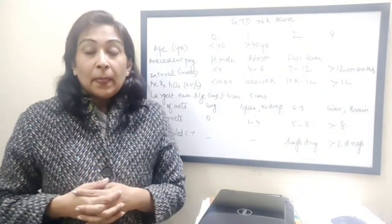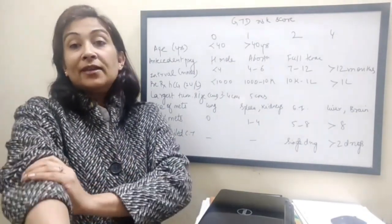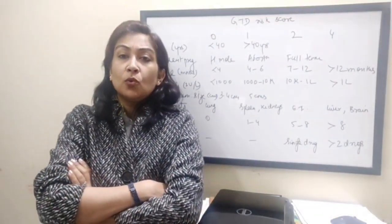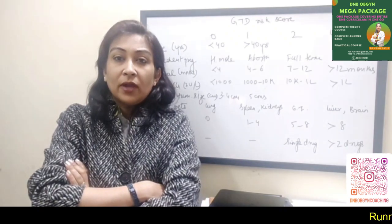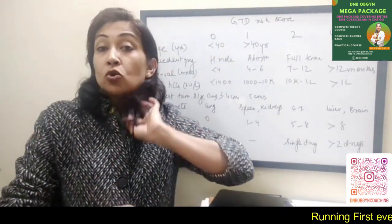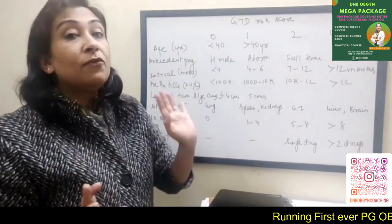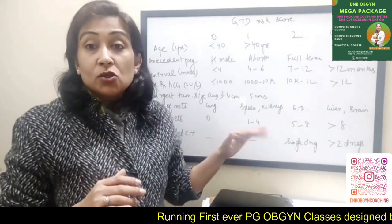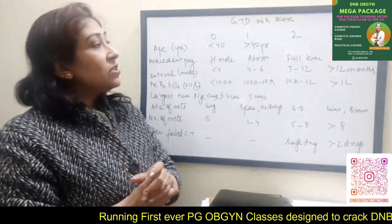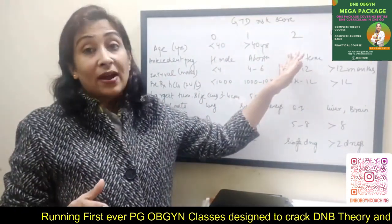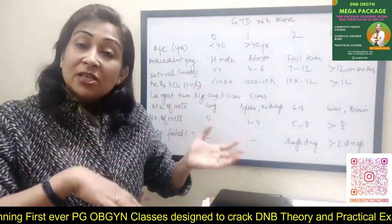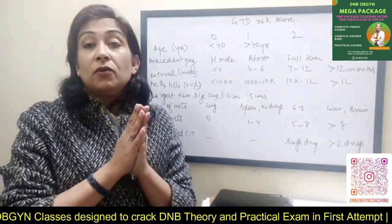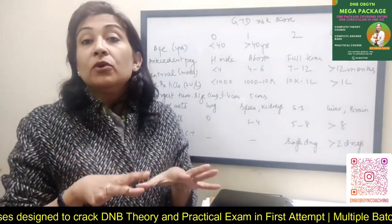Let's quickly see how to memorize the GTN scoring from zero, one, two, and four. Imagine a patient comes to you and she's a young female — automatically she belongs to zero. Less than 40 is zero, more than 40 is just one risk. Age doesn't affect the scoring much. What actually matters is the antecedent pregnancy: if she's had a full-term pregnancy, she goes to a high-risk factor of two. A previous H.mole usually ends up as GTN, but it's very low-grade GTN most of the time because you followed her up carefully.